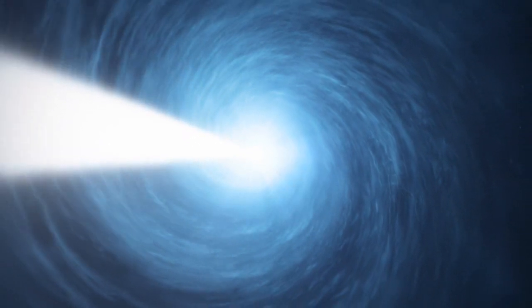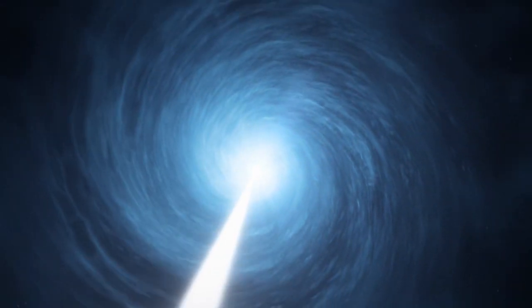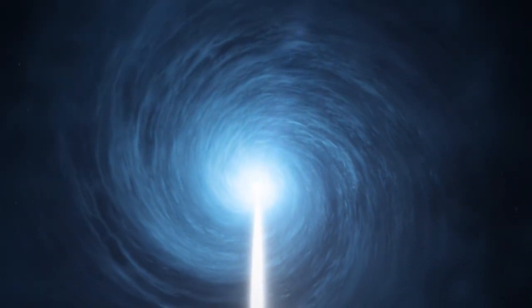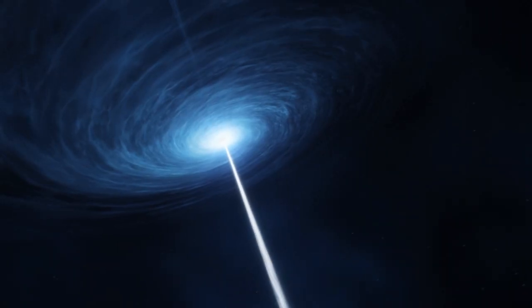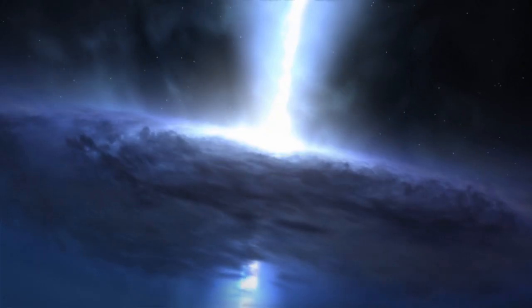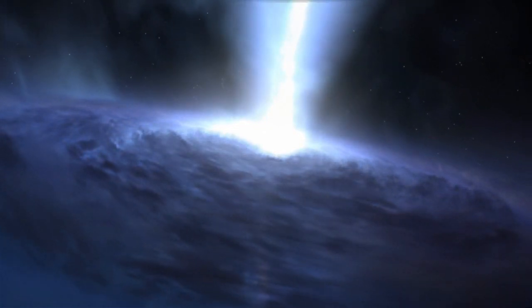Messier 106 has a supermassive black hole at its centre. Although this is true for most galaxies, this black hole is particularly active and hungry, gobbling up nearby material at a startling rate.